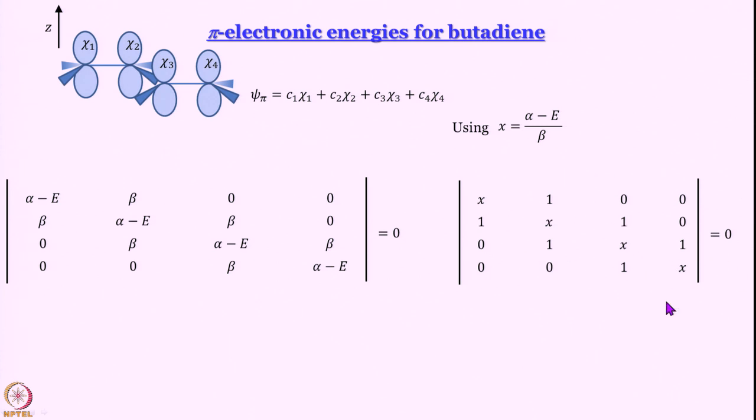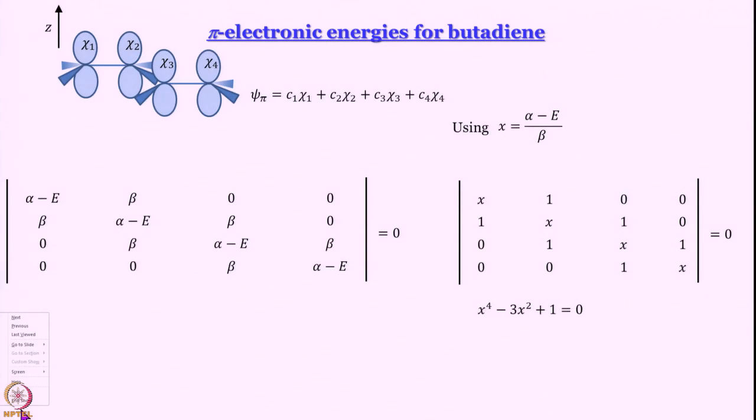What is the next step? You should expand it. When we expand, I leave it to you to do the expansion by yourself, it is not difficult. I will just show you the answer: x to the power 4 minus 3x square plus 1 equal to 0. Now, please do not get daunted seeing x to the power 4. x to the power 4 is just x square squared. So this is really a quadratic equation in x square. We know how to solve quadratic equations, we are going to proceed in the same way. We are just going to write this as x square squared minus 3 multiplied by x square plus 1 equal to 0.